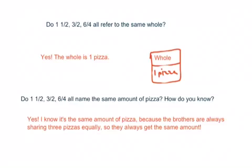So do 1 and a half, 3 halves, and 6 4ths all refer to the same whole? Yes they do. The whole is one pizza. That should make sense to you, right? So when I say 1 and a half, it's one whole, and half of another whole pizza. That's what the drawing, the first drawing was showing you. So if that's the case, do 1 and a half, or 3 halves, or 6 4ths all name the same amount of pizza? And how do you know that? Think about that, try and write down what your thoughts are there. Hopefully you end up with, yes. You know it's the same amount of pizza, because the brothers are always sharing 3 pizzas equally. So they're always getting the same amount. No matter which of the ways I did it, I shared it equally, right? Hopefully that makes sense to you.